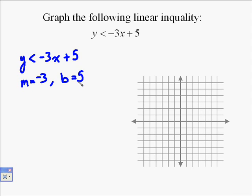And we remember when graphing using the slope-intercept method, we first graph our y-intercept. Our y-intercept is always on the y-axis, which in this case was 5.